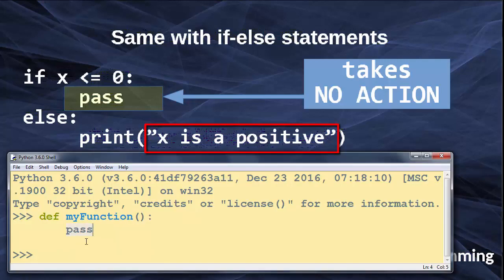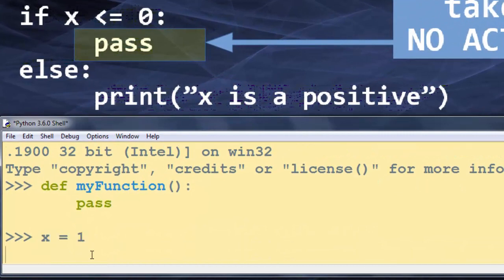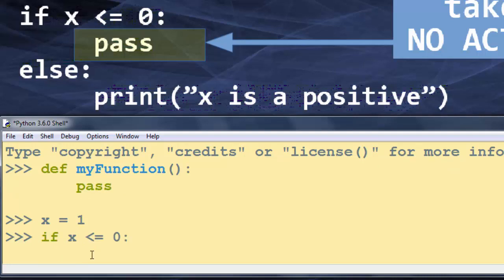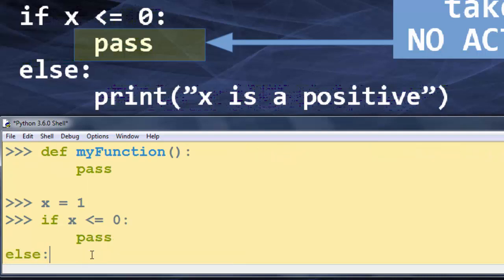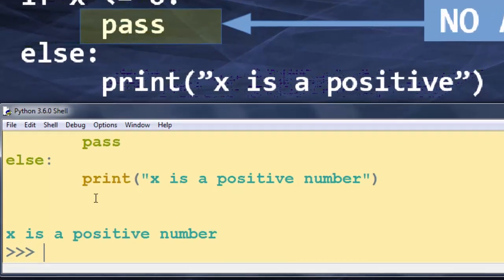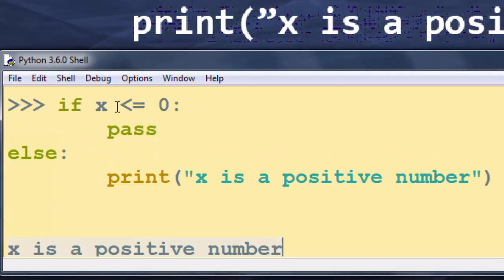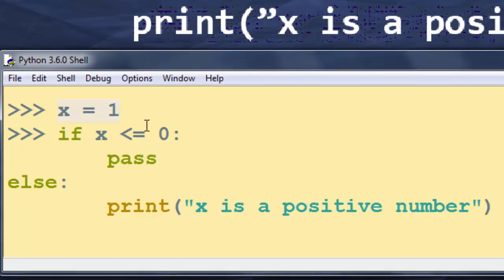I'm going to type that code again inside Python IDLE. I'm going to say that x equals 1, and then I'm going to write this code. And we get the answer that x is a positive number because x has value 1.